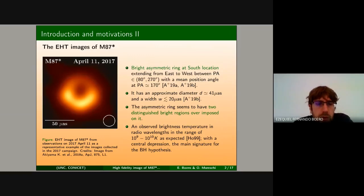This is one of the images that we have in mind, corresponding to the observational day of April 11. This image represents the emission from the accretion material surrounding the black hole. The picture is dominated by the bright sector that is referred to as a bright ring at southern location, extending from east to west in position angle and has been described as having an approximate diameter of about 40 microarcseconds and a width of about 20 microarcseconds.